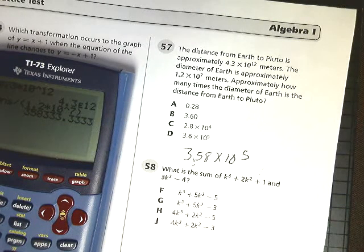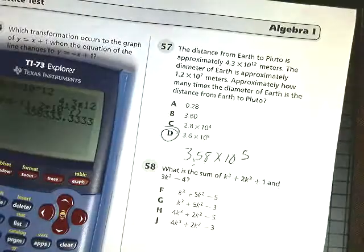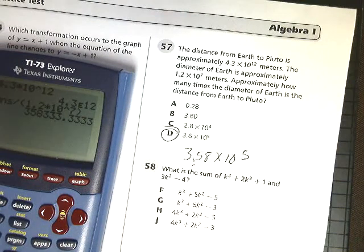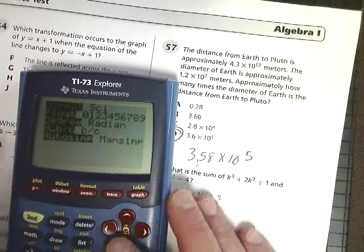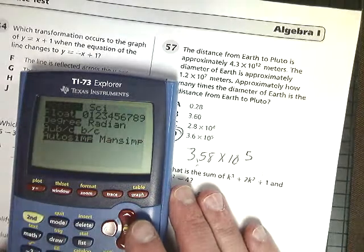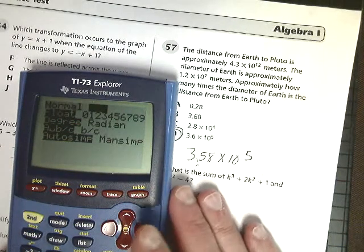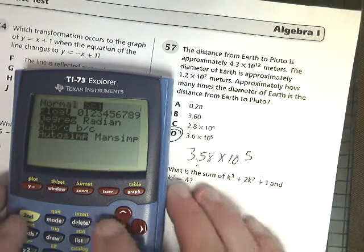If you notice ahead of time that it's a scientific notation question, you can always change the mode, and then just do it in scientific notation. So say I have mode, I go to scientific notation, make sure you press enter.